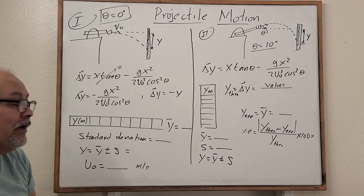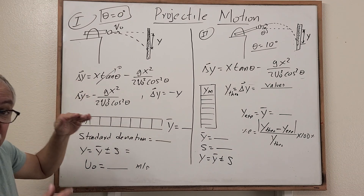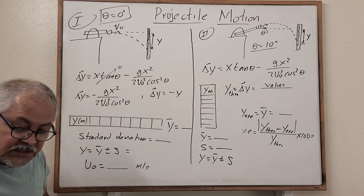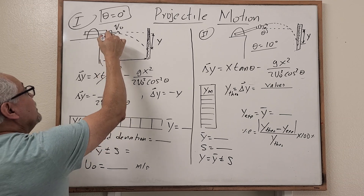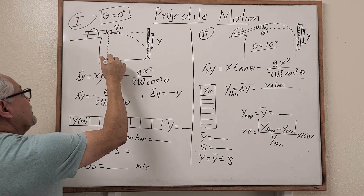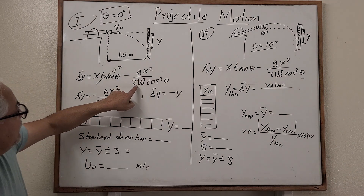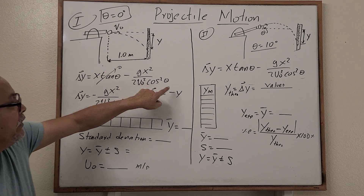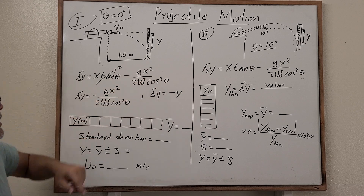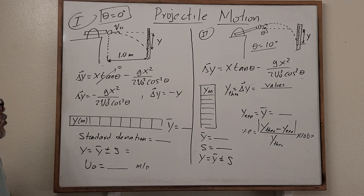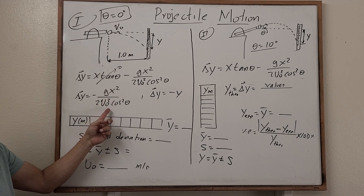Let's use a formula to calculate this distance. We can use: delta y (as a vector) equals x times tangent theta minus g times x squared divided by 2 times v-naught squared times cosine squared theta. In this case, x equals one meter — the distance from the projectile to the target. Since tangent of zero is zero and cosine of zero is one, this first term cancels, and we have delta y equals negative g x squared divided by 2 v-naught squared cosine squared theta.